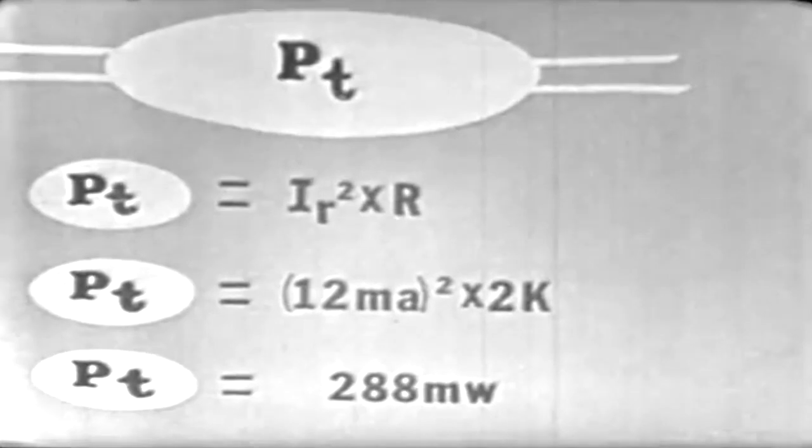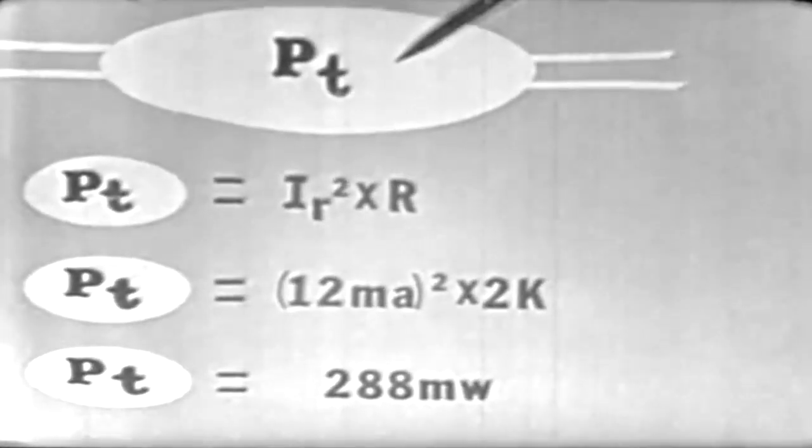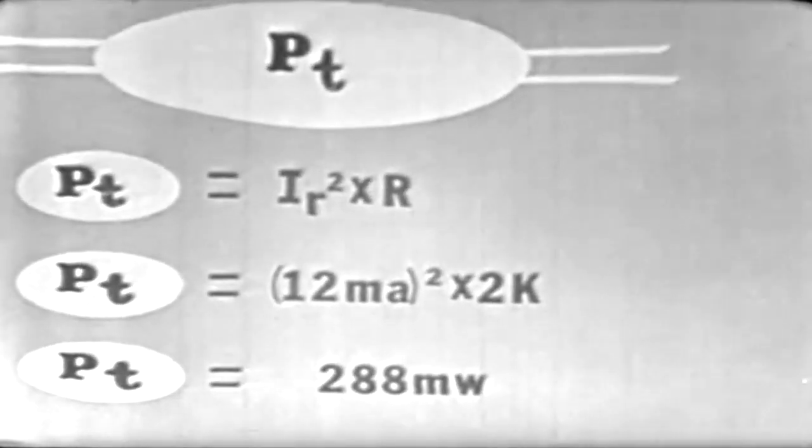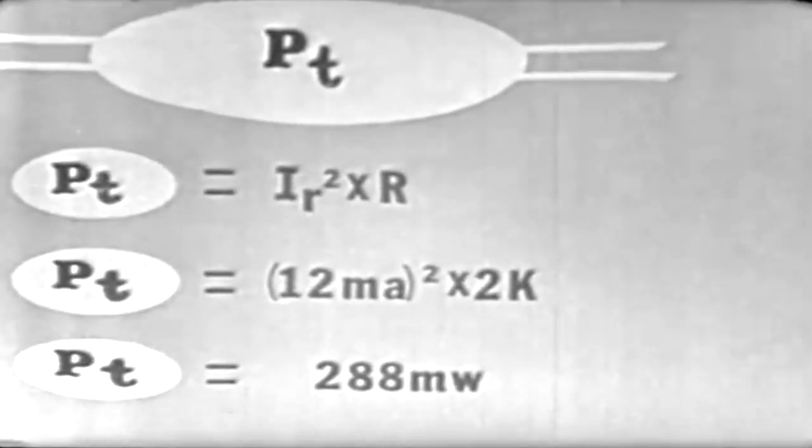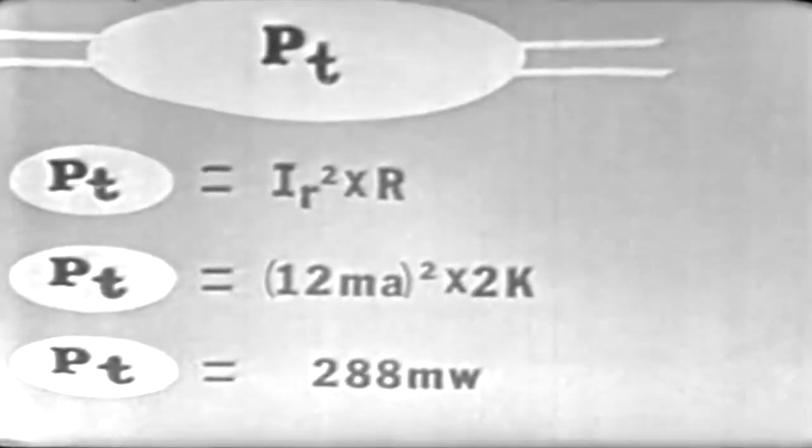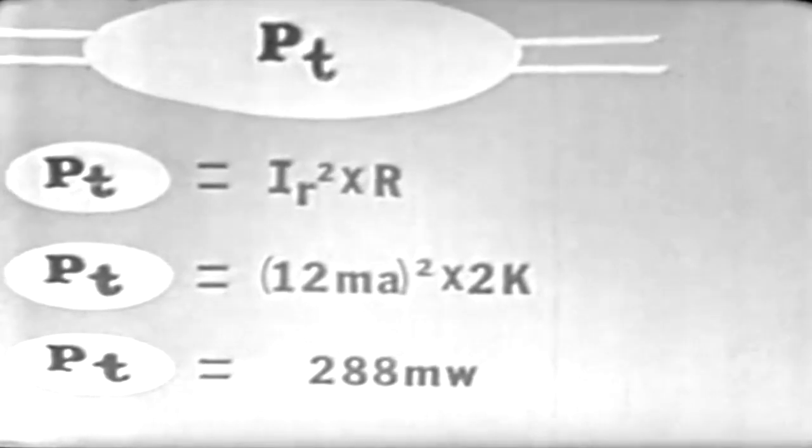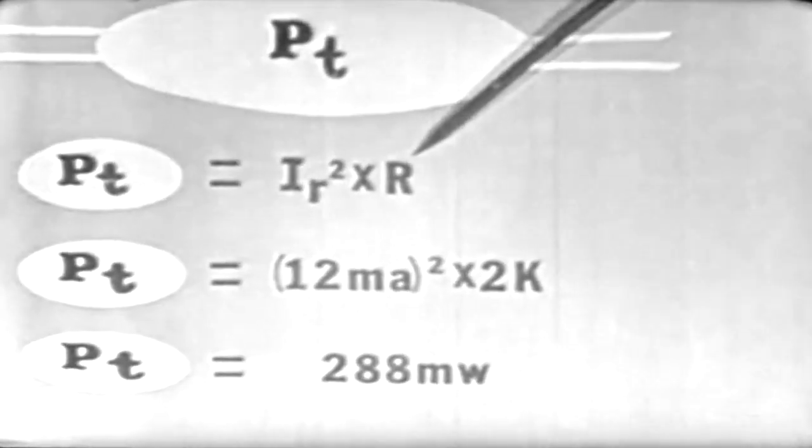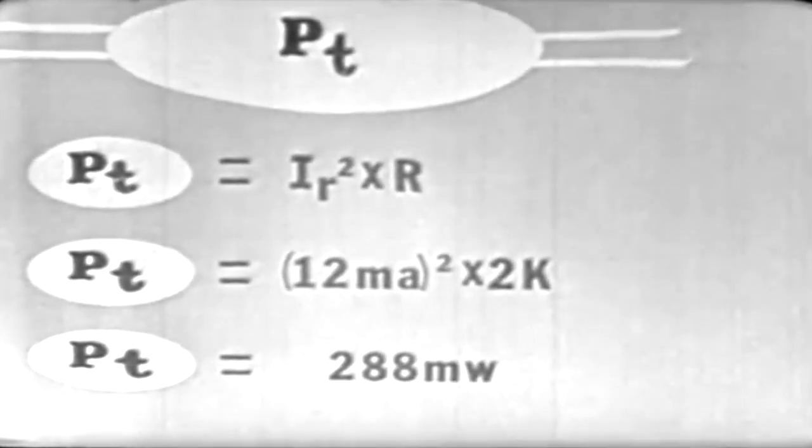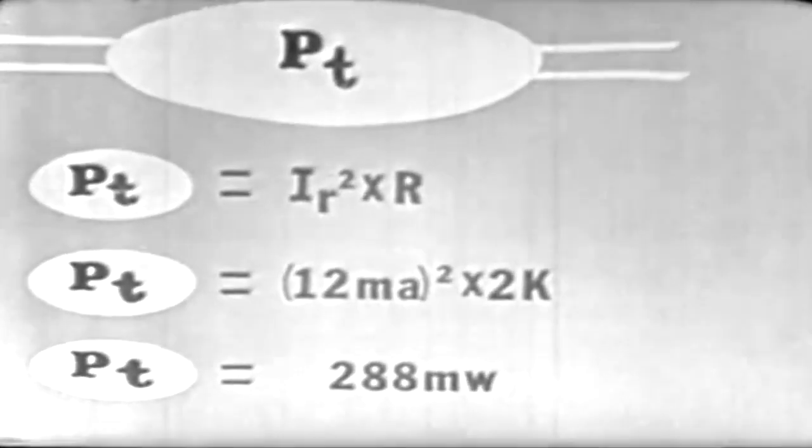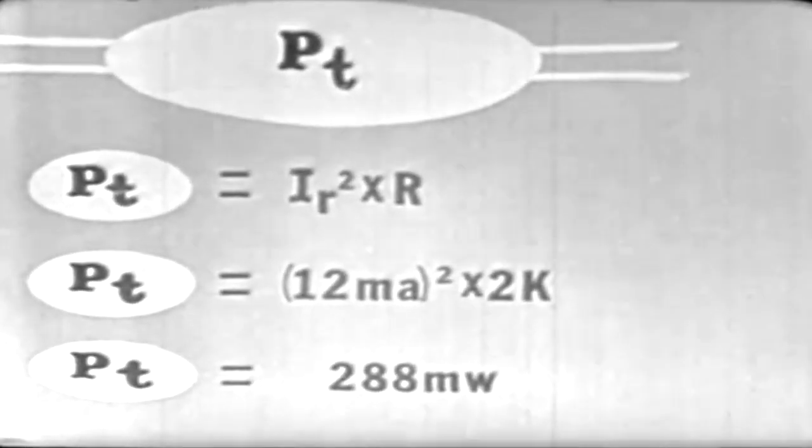Now that we have calculated our current by Pythagorean theorem, and our phase angle is 22.6 degrees, we can next determine the power dissipated in our circuit, which is the true power, PT. We can use one of our familiar power formulas. Power is equal to I squared R, since R is the only component in the circuit that dissipates power. Substituting, we can see that our true power is equal to 288 milliwatts.